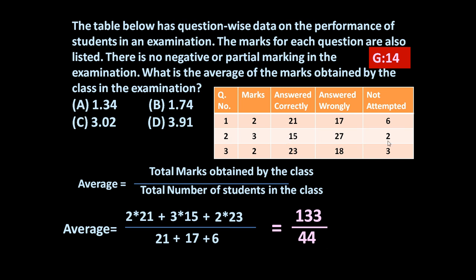So if you add these then also it will become 44. If you add these numbers then also it will become 44 because it is a class of 44 students. So average is equal to 133 upon 44 is equal to 3.02. So answer is 3.02.